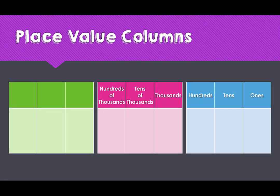As we add more digits to form larger numbers, we move into the millions. Again, these place value columns follow the same pattern as before, this time with the millions matching our ones and thousands.